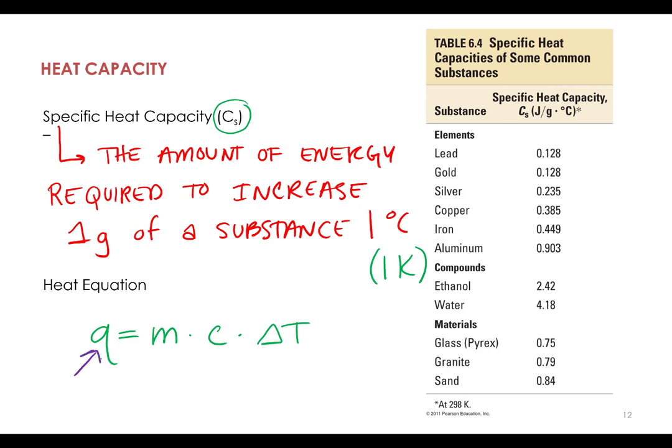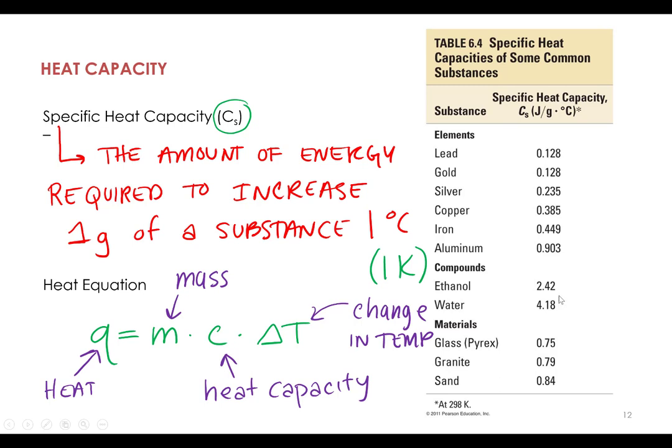Of course, Q is what? Heat. M stands for mass. Specific heat capacity, that's what we're just learning, that's C. And then delta T is your change in temp.